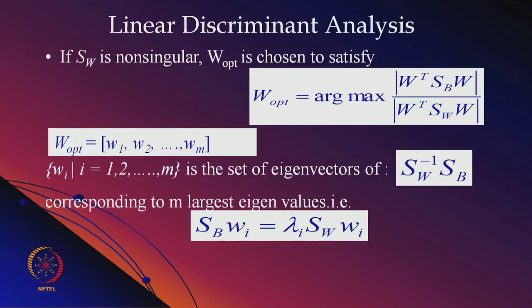Both matrices are computed via outer products: SB uses only the class means relative to the overall mean, while SW uses samples relative to their class-specific means. PCA subtracts the overall mean; LDA subtracts class means. We find optimal W as a set of m eigenvectors of the matrix SW⁻¹·SB.